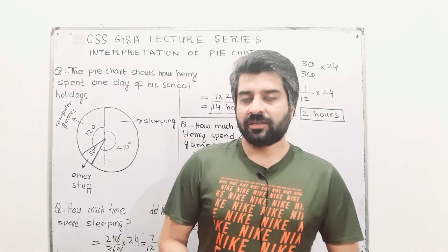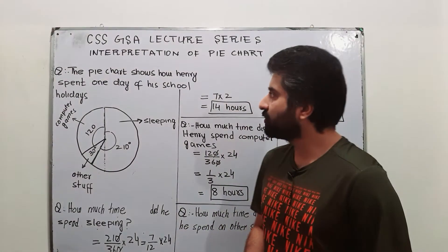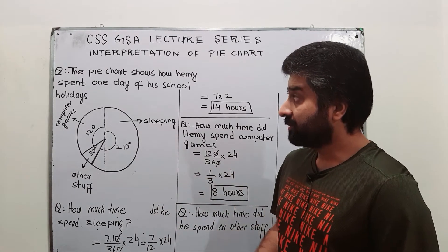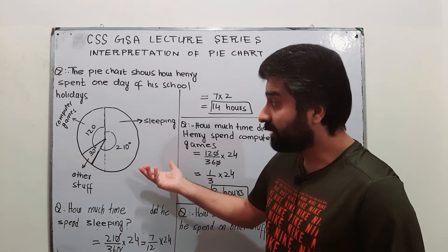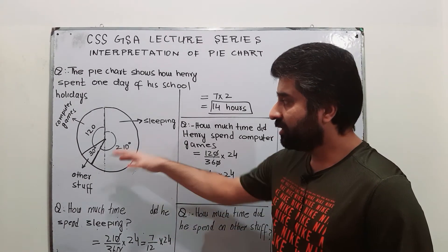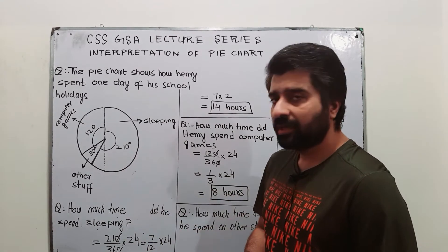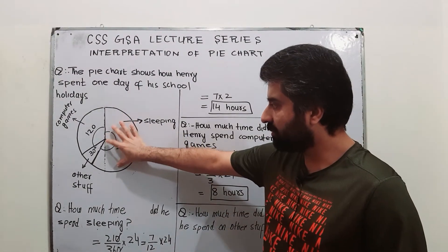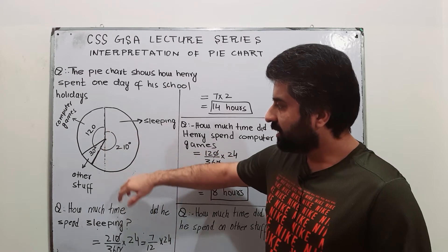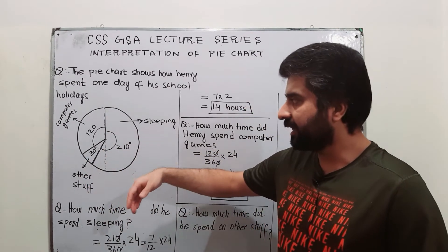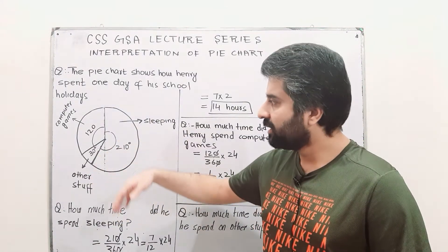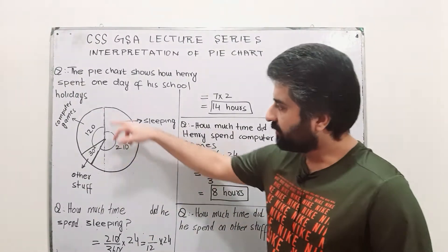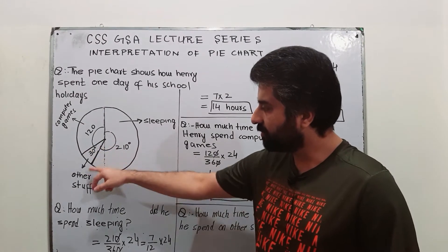So let us take an example. The pie chart shows how Henry spent one day of his school. This pie chart shows the time spent by Henry — his activities during one day. He slept for one section of the day, then other stuff which may include food or TV, and then computer games. So this pie chart is divided into three sectors: the first sector is for sleeping, the second for other stuff, and the third for computer games.